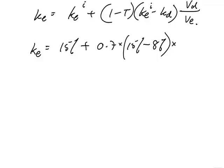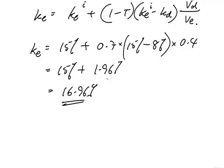Therefore, if you check the arithmetic: 0.7 times (15 − 8) times 0.4 = 1.96. The cost of equity would be 15 + 1.96 = 16.96%. We all agree it must be higher than 15 — the more gearing, the bigger risk to shareholders, the more return they want.